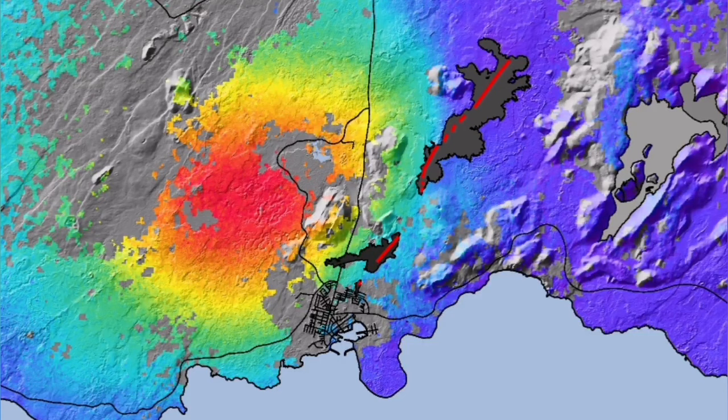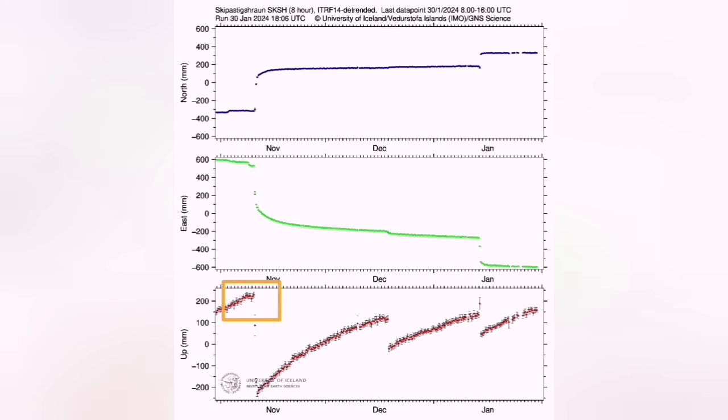For each of the eruptions we had one of these patterns of the uplift and then downfall. Magma accumulating then depleting and coming to the surface as lava erupting.